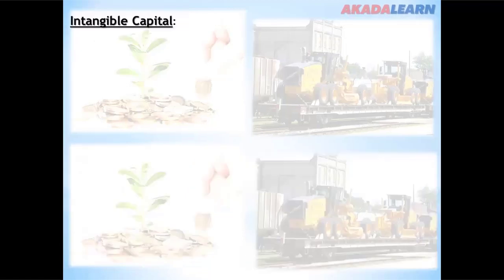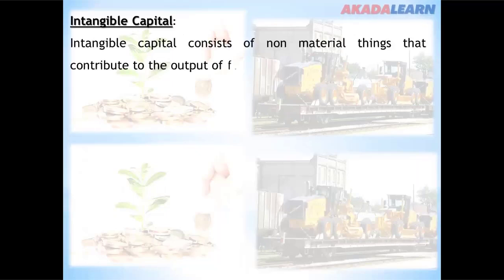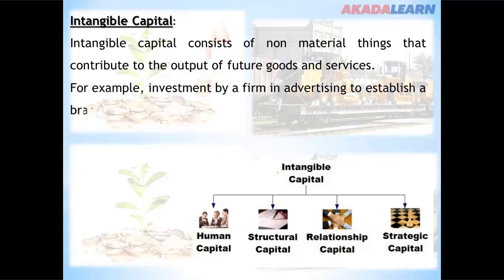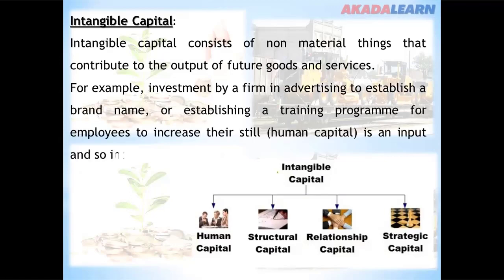Intangible capital consists of non-material things that contribute to the output of future goods and services. These include human capital, structural capital, relationship capital, and strategic capital. For example, a firm's investment in advertising to establish a brand name, or a training program for employees to increase their skills, is human capital and is included as capital.